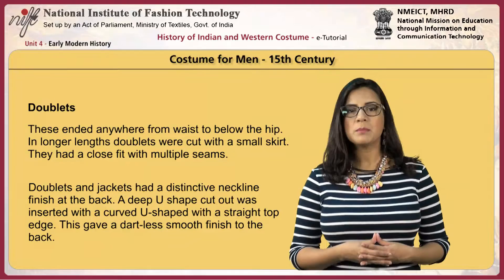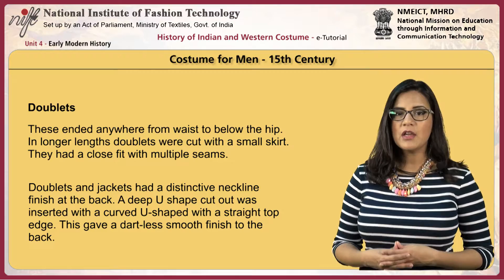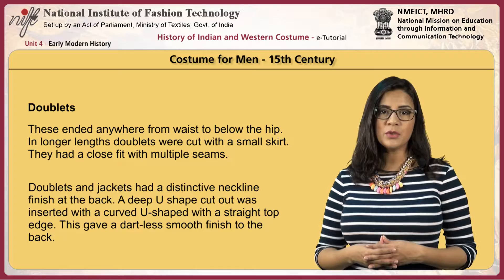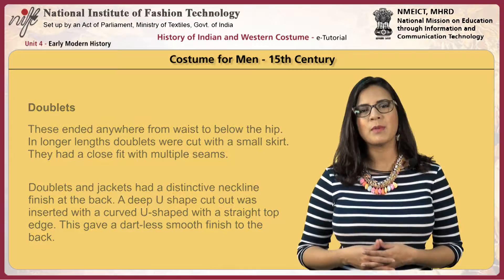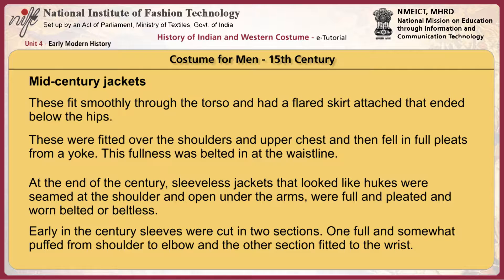Doublets and jackets had a distinctive neckline finish at the back. A deep U-shape cutout was inserted with a curved U-shape with a straight top edge, giving a dartless smooth finish to the back. Mid-century jackets fit smoothly through the torso and had a flared skirt attached that ended below the hips. Late-century jackets were fitted over the shoulders and upper chest and then fell in full pleats from a yoke. This fullness was belted in at the waist. At the end of the century, sleeveless jackets that looked like huques were seamed at the shoulder and opened under the arms, full and pleated and worn belted or beltless. Sleeve styles were distinctive in Italian dress.